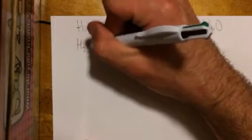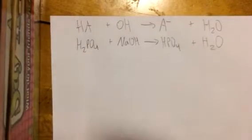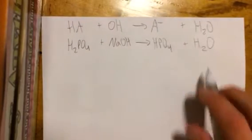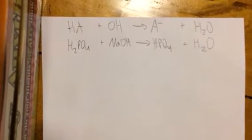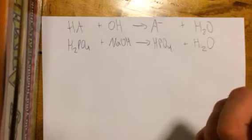So let me write out the almost full equation. I like to take some shortcuts here. So H2PO4 plus NaOH produces HPO4 plus H2O. Alright, and so now that we have the equation, we are ready to get going.